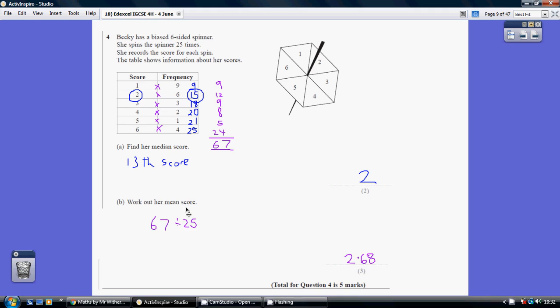Now to work out the mean score, we've got to add up the total score and divide that by the number of spins. So on 9 occasions we scored 1, 9 times 1 is 9. On 6 occasions we scored 2, 6 times 2 is 12, and so on.